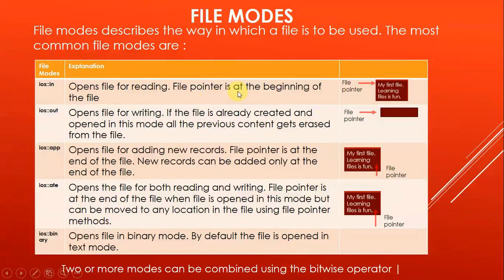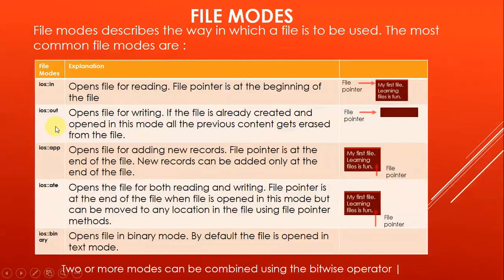With ios::in mode, the file pointer is at the beginning of the file. ios::out opens the file for writing, but if the file already exists and is opened in this mode, all previous contents are erased. So be very cautious when opening a file in output mode — the file is typically opened in output mode only once while creating it, and after that it is opened in other desired modes. When opened in writing mode, the file becomes empty and the file pointer is at the beginning.